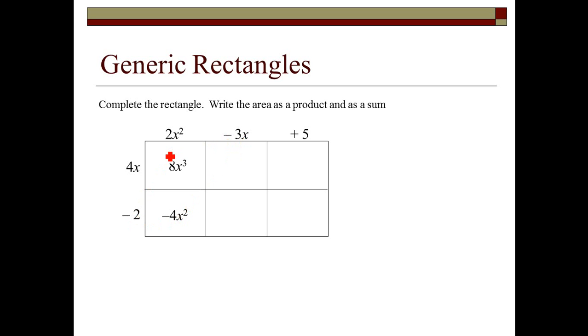Then over here, I can do negative 3x times 4x. That's negative 12x squared. So x times x gives me x squared. Negative 3x times negative 2 will give me positive 6x. Remember, negative times negative is positive. 4x times 5 is 20x. And 5 times negative 2 is negative 10.